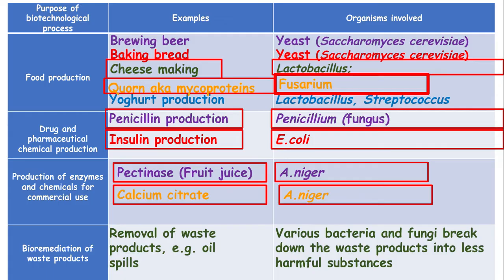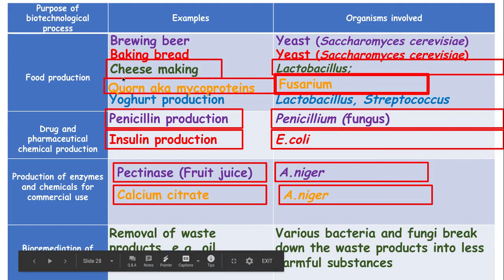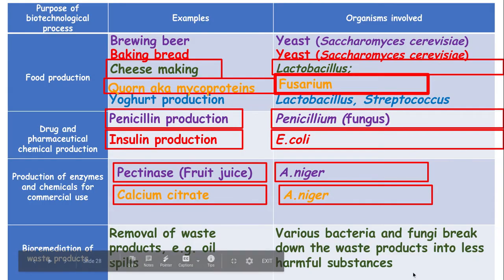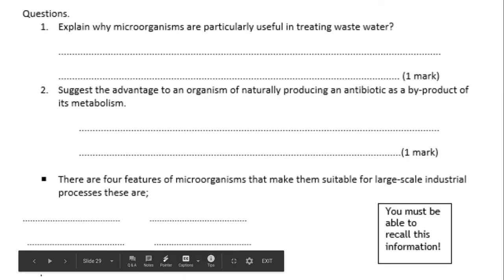The ones in the red boxes are taken directly from the mark scheme and you do need to be aware of those. Also, just to draw your attention to this one here - quorn can also be known as mycoprotein, and that comes up quite a few times in the exams, so you need to be aware of that as well.